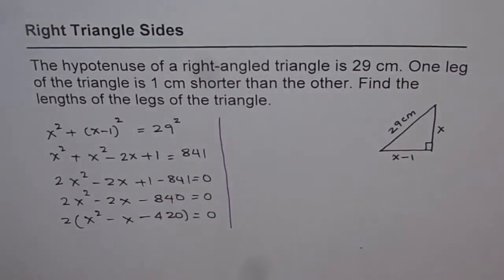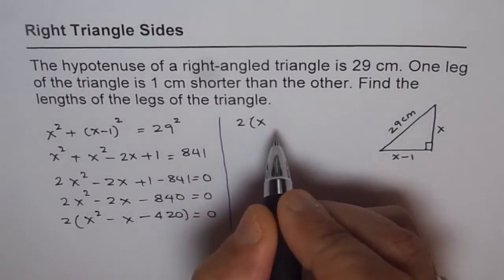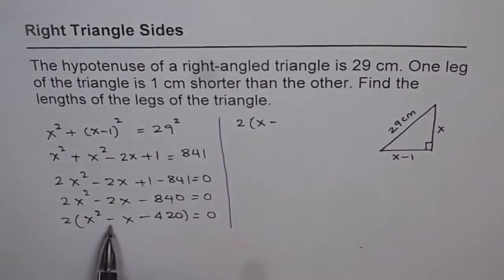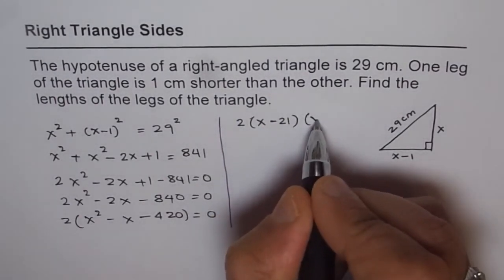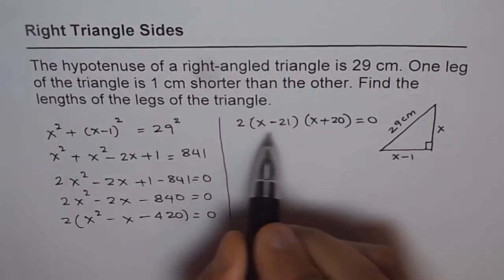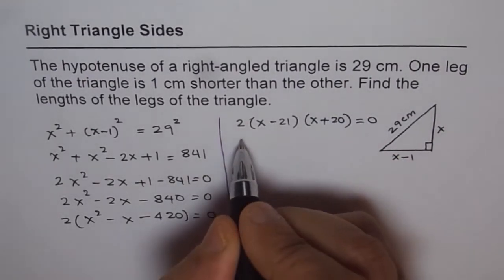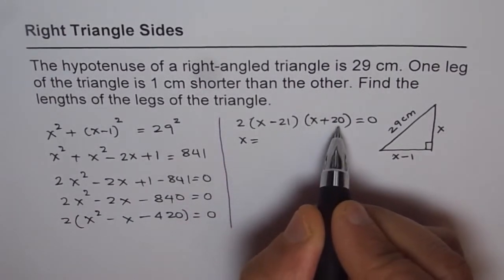So from here I will adopt 2 methods. First we could factor. And if we factor we get 2 times, we want minus as a bigger term, so minus 21 times x plus 20 equals to 0. Now this is equal to 0 if x is equal to plus 21 or minus 20.